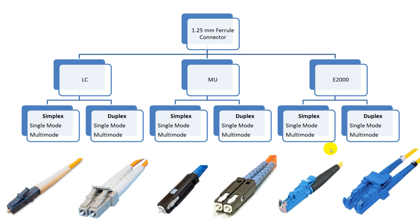The next major type of single fiber connectors has a 1.25 mm diameter ferrule. The most common one is the LC connector, which was developed by Lucent. It has a snap coupling mechanism and a 1.25 mm ferrule. LC connectors are available in both simplex, which holds one fiber, and duplex, which holds two fibers.